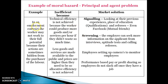An example of the principal-agent problem: in an employment contract, workers may not work to their full potential because their actions are often hidden from the employer. It's inefficient because it reduces technical efficiency — they're not working to their productive capacity, they're wasting time, and fewer goods and services may be made available at higher prices. To solve this, we look at their previous experience, place of education, and referees through signalling, and screen them through interviews, aptitude tests, and calling referees.